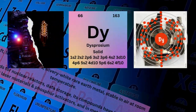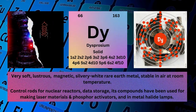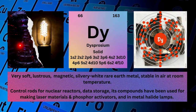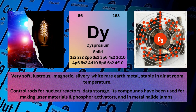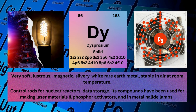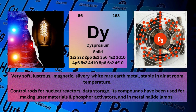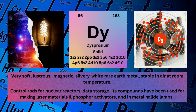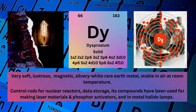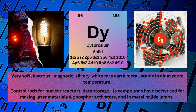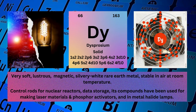Dysprosium. Atomic number: 66. Mass number: 163. Symbol: Dy. State: Solid.